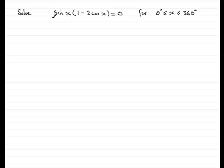Now when you have an equation that is factorised and equals zero, then we can say either one or more of the factors equals zero. So in this particular example, we can therefore say that either the sin x equals zero or the other factor 1 minus 2 cos x equals zero.